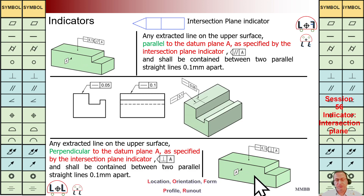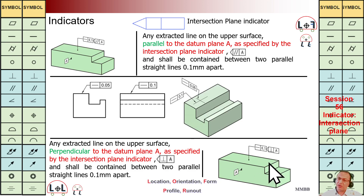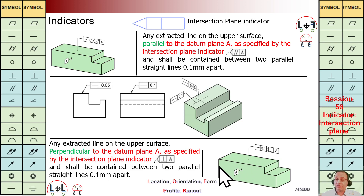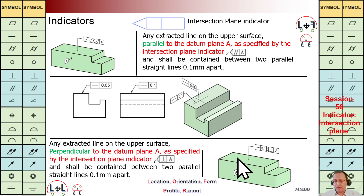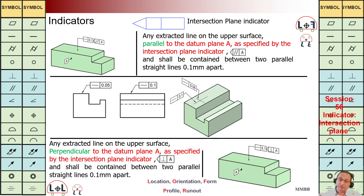At the bottom we are going to have the same but here it is perpendicular to A. We are going to have several planes perpendicular to A. We need to extract the lines between those perpendicular planes and this top surface. Those extracted lines should be within this Tz — between two parallel lines with Tz 0.1.